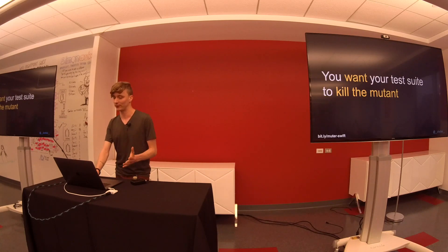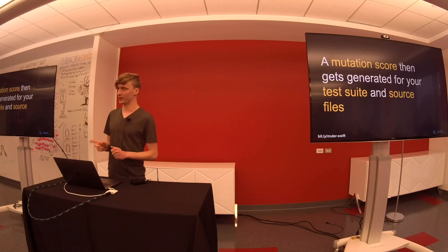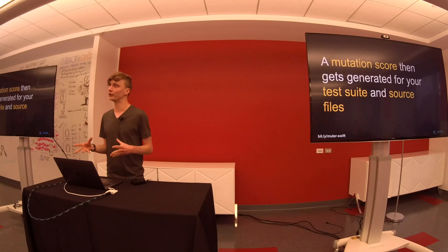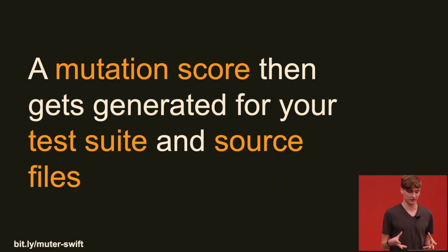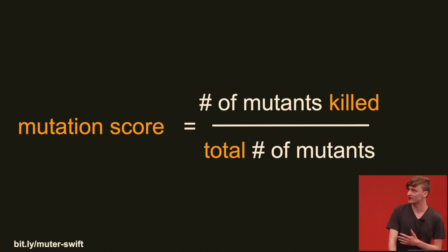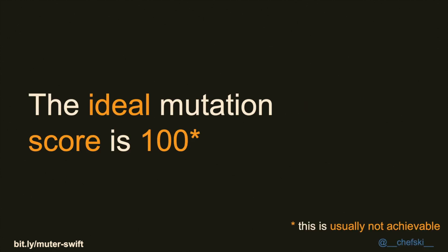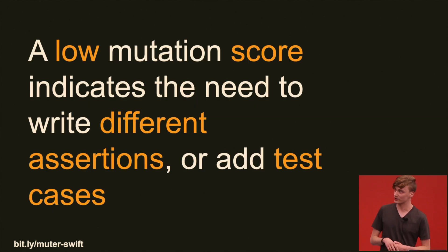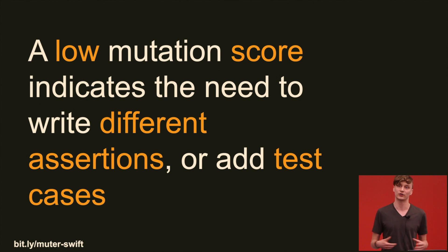The key thing with mutation testing is it generates a metric called a mutation score, which you can use to analyze how your test suite is behaving. A mutation score will be generated for your entire test suite as well as individual files within your code base. It's a simple ratio: the number of mutants killed over the total number of mutants introduced. You want it to be 100 — it's usually not possible. Muter's score is around 85, and that's okay. If you have a low mutation score, that tells you that you need to write different assertions or test cases to drive out those issues.